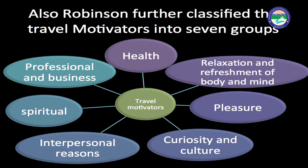Similarly, Robinson further classified travel motivators into seven groups: health; relaxation and refreshment of body and mind; pleasure; curiosity and culture; interpersonal reasons; spiritual; and professional and business.